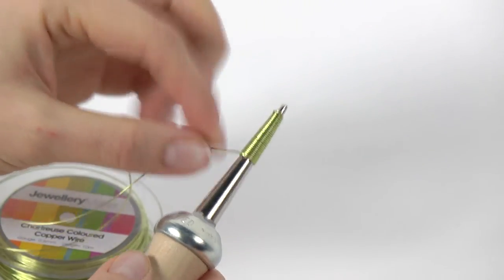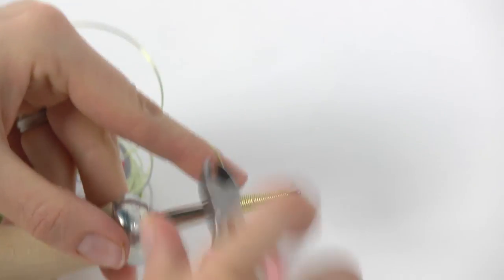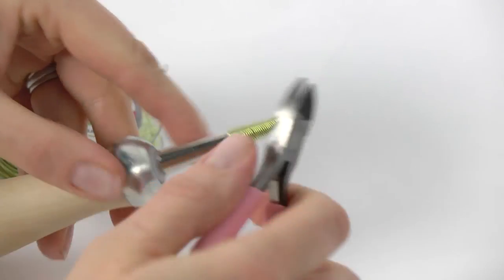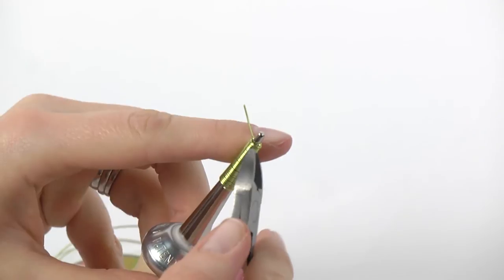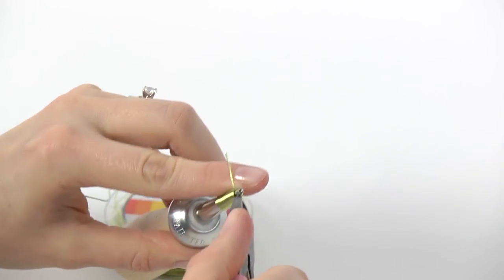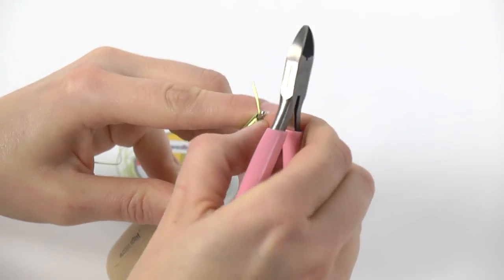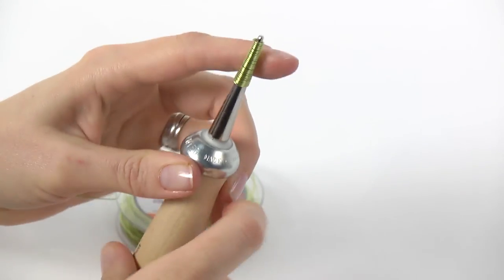Then trim off any excess wire and cut through the little loop that you left yourself at the top. Remove any excess wire and then release your coil.